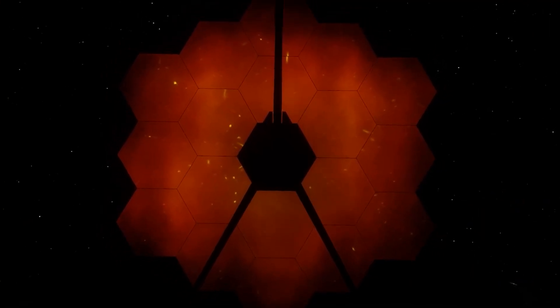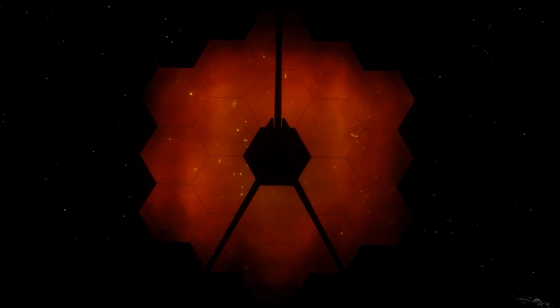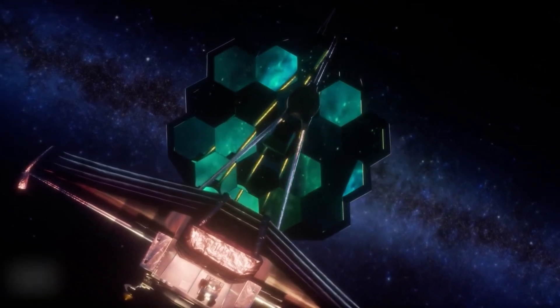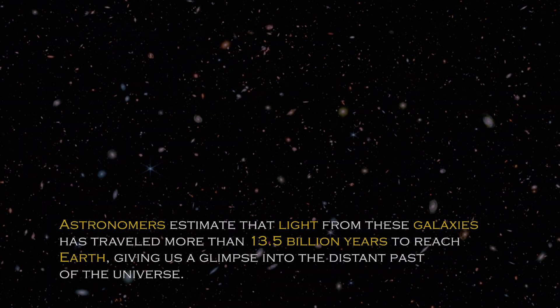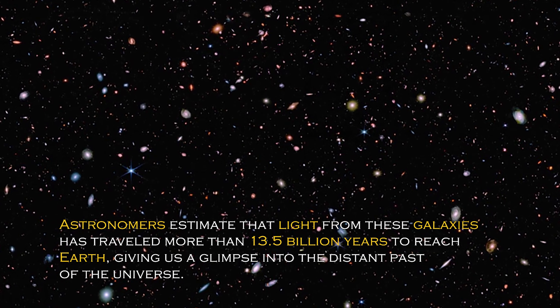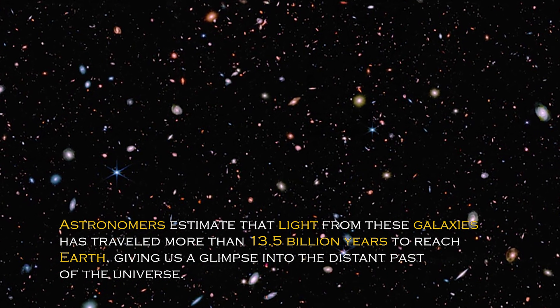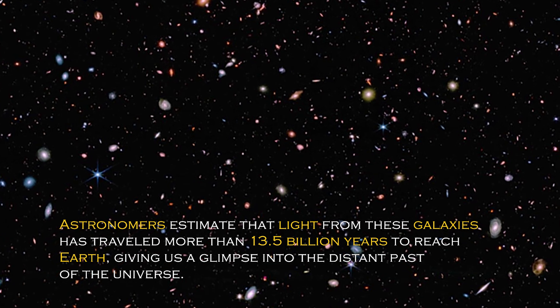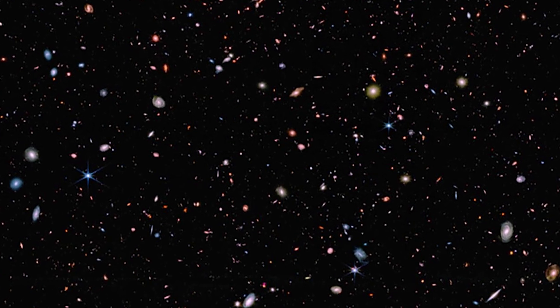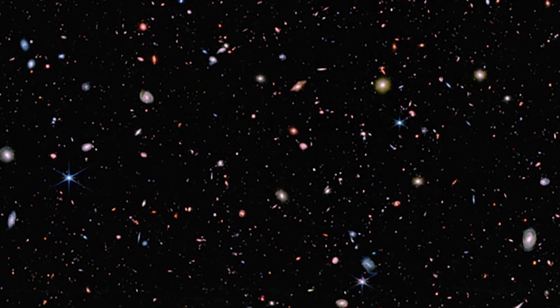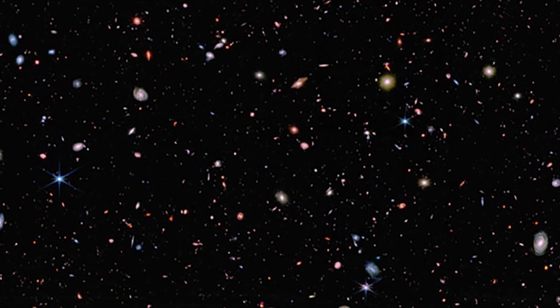Amazingly, the James Webb Space Telescope confirmed that these ancient galaxies are real. Thanks to this revolutionary telescope, we can now observe the oldest galaxies ever seen. Astronomers estimate that light from these galaxies has traveled more than 13.5 billion years to reach Earth, giving us a glimpse into the distant past of the universe. These galaxies were discovered when the universe was young, which sheds light on how quickly the first generations of galaxies emerged.